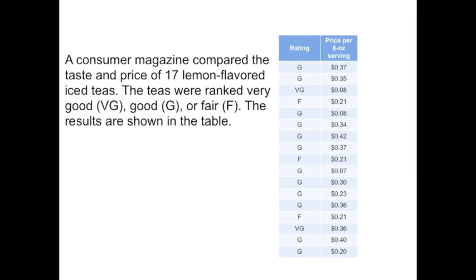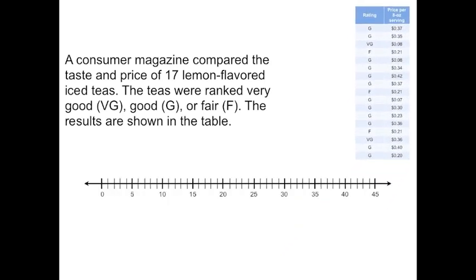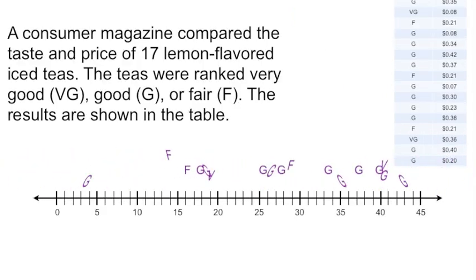So we'll go ahead and construct a straight line. And the numbers on the number line represent the prices of each type of tea. Instead of using X's on our number line, we're going to use the way the teas are ranked. So we're going to use the letters VG, G, and F as opposed to just plain X's.